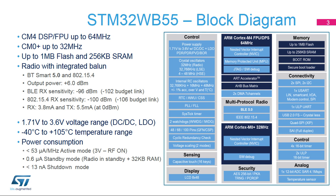On top of wireless and ultra-low power aspects, a particular focus was placed on embedding security hardware functions, such as a 256-bit AES, PC-ROP, JTAG fuse, PKA, an elliptic curve encryption engine, and root secure services, or RSS. The RSS allows authenticating OTA communications, regardless of the radio stack or application.